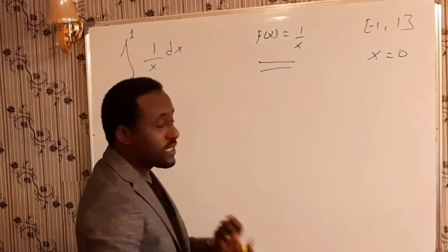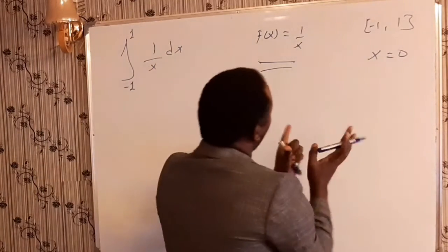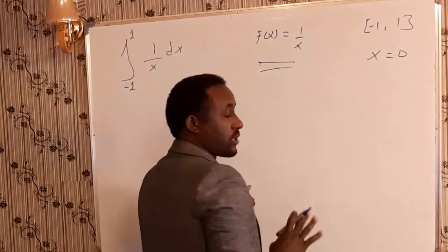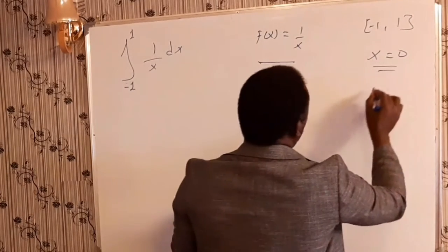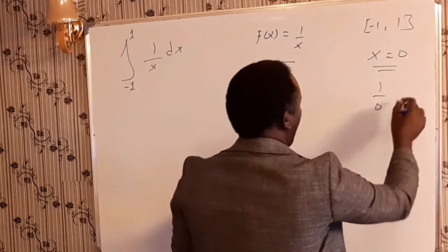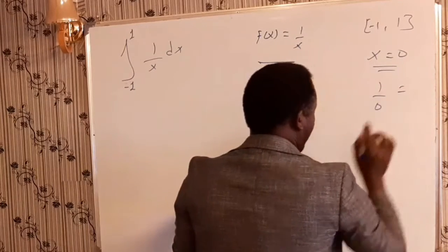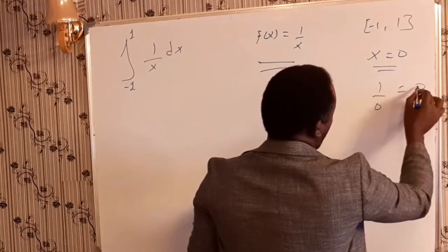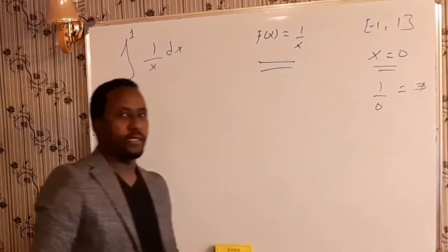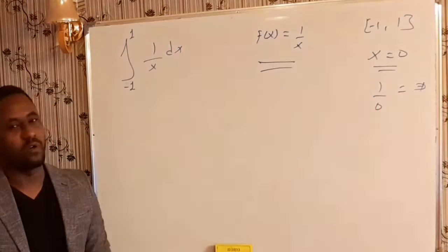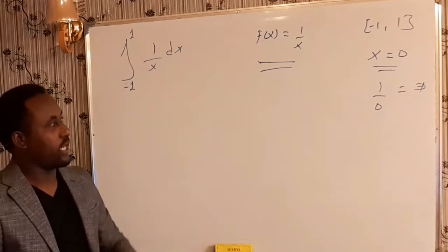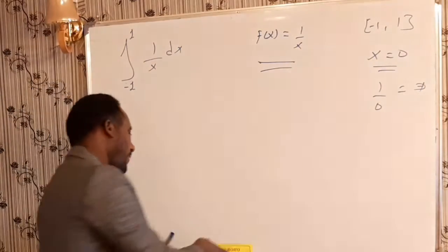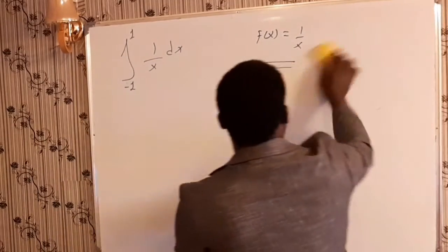It is discontinuous because if you plug any number from the interval into x, when x = 0, the function gives 1 over 0, which is undefined. Since 1/x is undefined at x = 0, the function is discontinuous at 0. Therefore, what will be the area of this region? In order to find the area, let's first draw the graph of this formula.